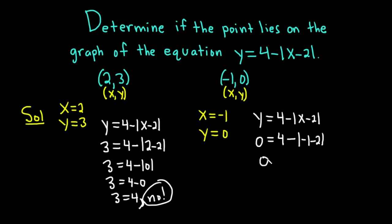We get 0 equals 4 minus the absolute value so in this case negative 1 minus 2 is negative 3 so we get 0 equals 4 minus and then the absolute value of negative 3 is 3 so we get 4 minus 3. So in this case we get 0 equals 4 minus 3 which is 1.